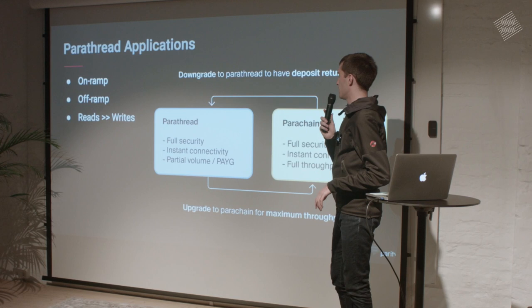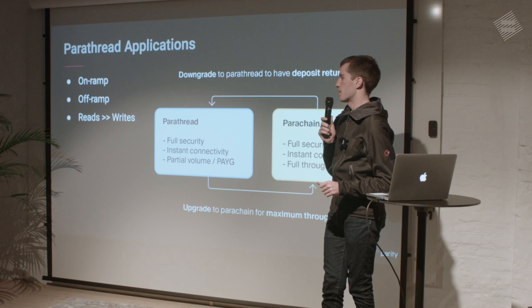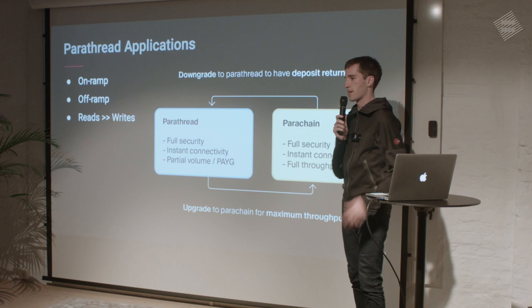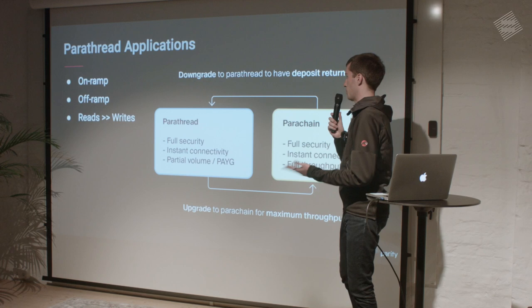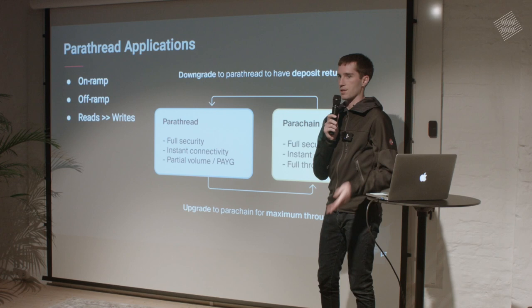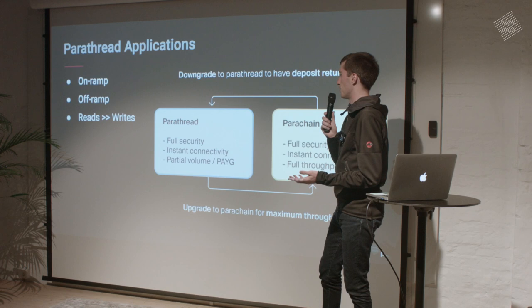What applications are parathreads good for? There are three major categories. One is an on-ramp to Polkadot — you just don't have enough funds to raise like 30,000 dots to be a parachain. So you start out as a parathread, and once your application gains adoption and gets a lot of users, maybe you can raise the money after that to become a full parachain.